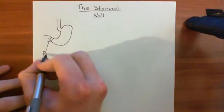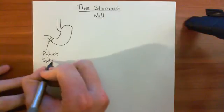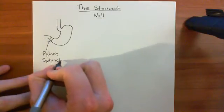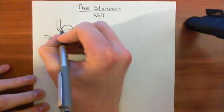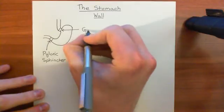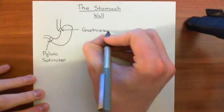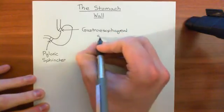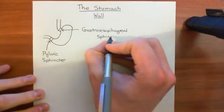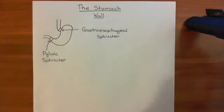So here is the pyloric sphincter, or just the pylorus. We also have the sphincter between the esophagus and the stomach up here, called the gastroesophageal sphincter. 'Gastro' means pertaining to the stomach, and 'esophageal' obviously means pertaining to the esophagus. It's just a thickening of the circular muscle that can constrict and therefore close off the gap between the esophagus and the stomach.